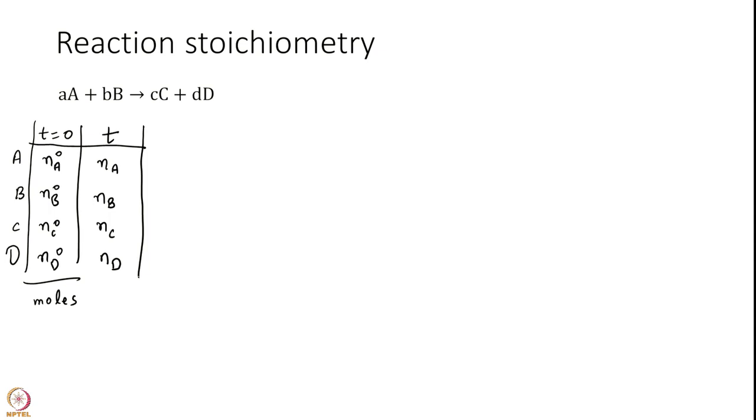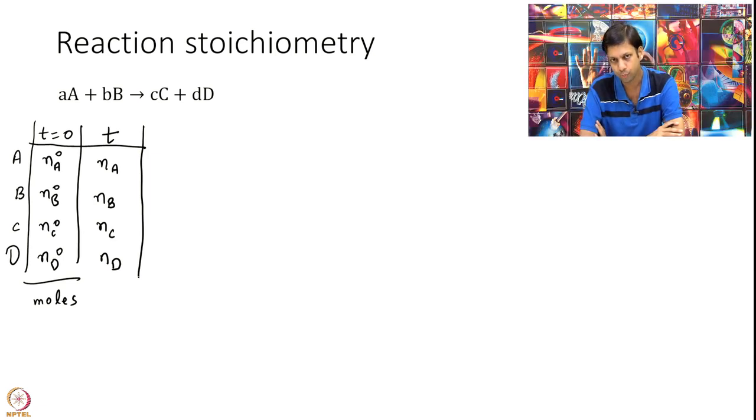Can you tell me a relation between these NA and NA naught and NB and NB naught with the stoichiometry a and b's? Can you write an equation? What I want you to do is to pause the video. Think about this. How do you calculate? How do you construct a relation?